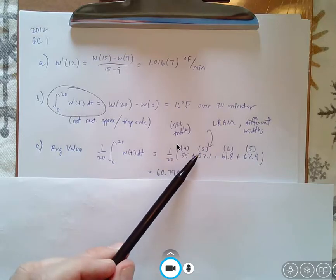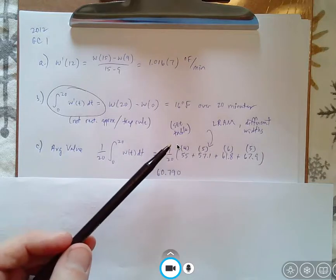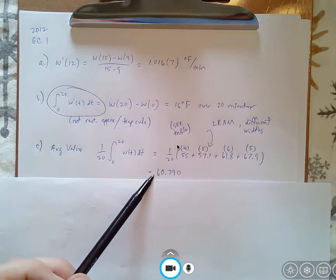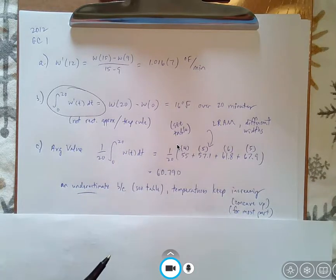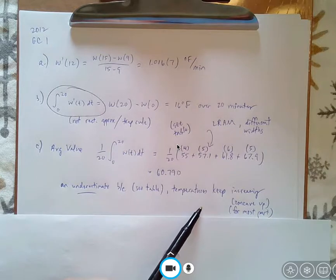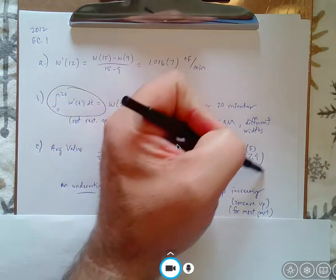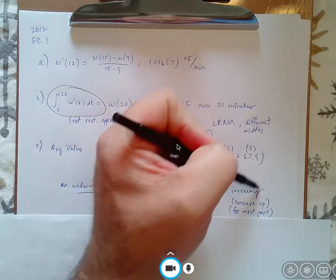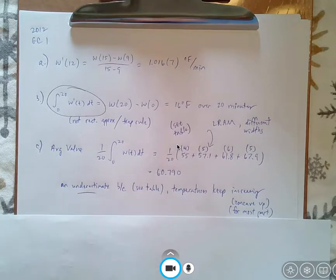What's inside the parentheses would be the sum of all of the degrees, which really doesn't make too much sense. The average temperature is 60.790. And that is an under-approximation or an underestimate because if you look at the graph, the y values keep increasing. So you're going to get, for the most part, a concave up graph where the LRAM rectangles will be under the curve, thus an under-approximation.